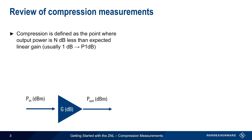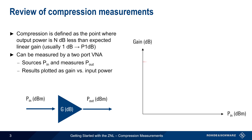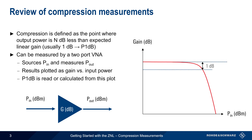There are several ways of measuring gain compression, but the most important and the most accurate is using a two-port Vector Network Analyzer, or VNA. One port of the VNA sources the device input power, P in, and another port measures the output power, or P out. The results are plotted as gain versus input power, which produces a graph such as the one shown here. The 1 dB compression point, or P1dB, can then be read or calculated from this plot.